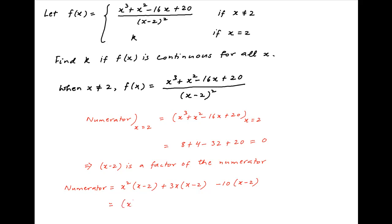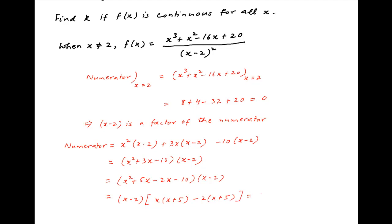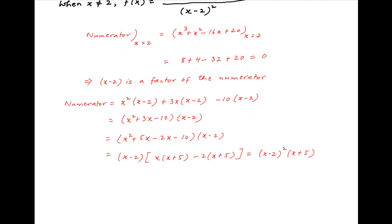This is equal to (x² + 3x − 10) times (x − 2), which can be expressed as (x² + 5x − 2x − 10) times (x − 2). This factorizes to (x − 2)² times (x + 5).